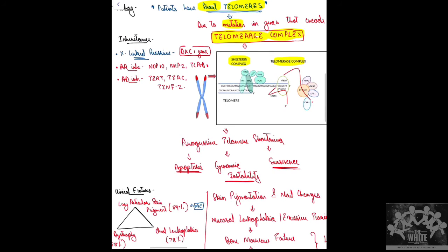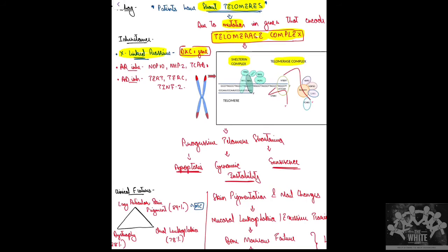In X-linked inheritance — the most common form — there is a DKC1 gene mutation leading to abnormal dyskerin protein. If dyskerin is abnormal, there is alteration in the telomerase enzyme. In autosomal recessive inheritance, genes such as TERT (telomerase reverse transcriptase) and TERC can be abnormal.